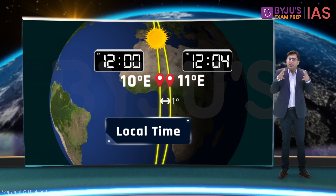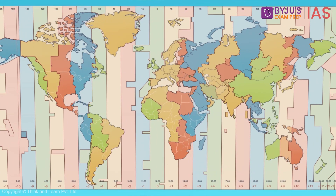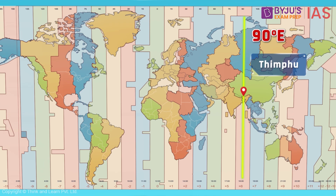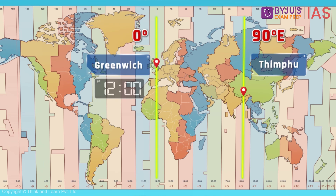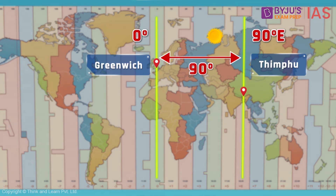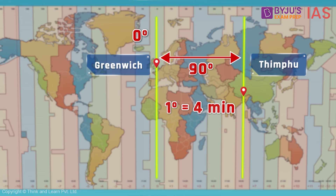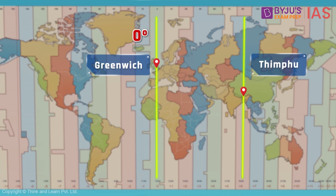Let's understand this better with an example. Suppose we have to determine the local time of Thimphu in Bhutan, located at 90 degrees East longitude, when the time at Greenwich, located at 0 degrees, is 12 noon. The distance between Greenwich and Thimphu is 90 degrees. We know the sun covers a distance of 1 degree every 4 minutes, so to cover 90 degrees the sun would need 90 × 4 = 360 minutes, or 6 hours.